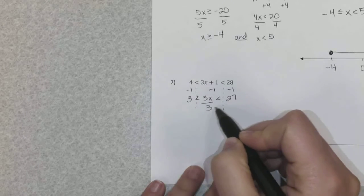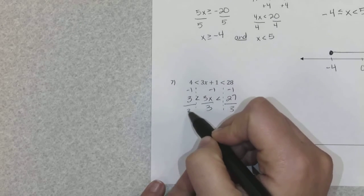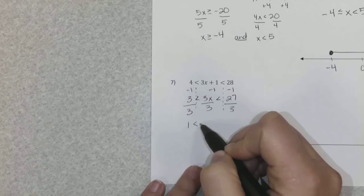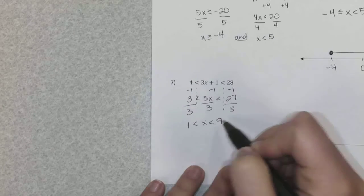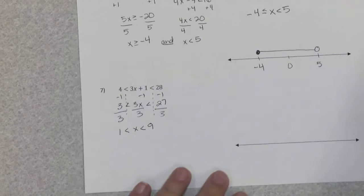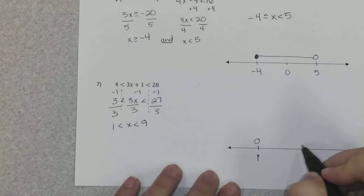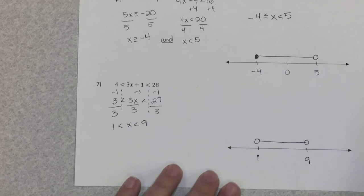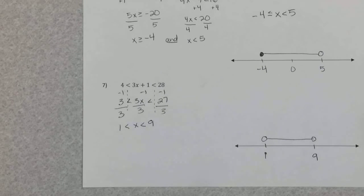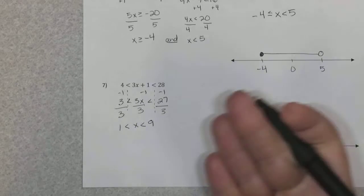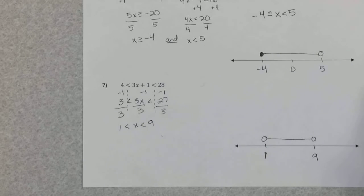And then when I divide by 3, I'm going to do that three times. So I get 1 is less than x is less than 9. So I'm going to shade that. I've got my 1 and my 9, they're both open circles, and I'm just shading between. So that's how you would solve that problem and your answer is already in compact form, so you don't have to worry about converting it.